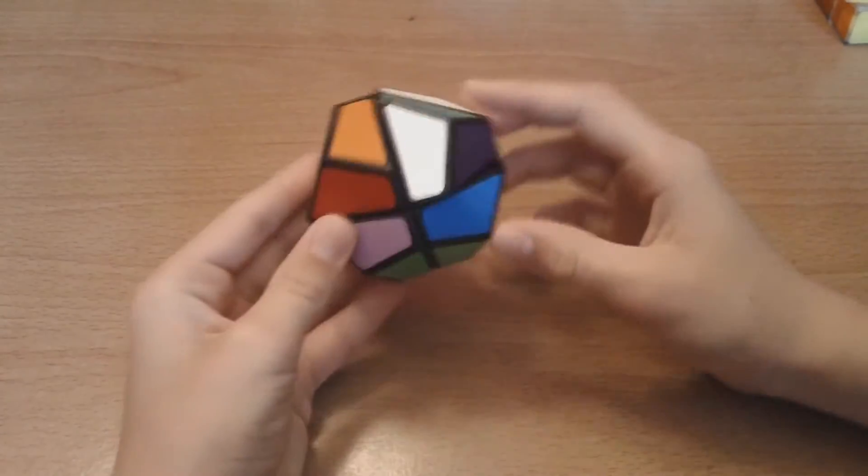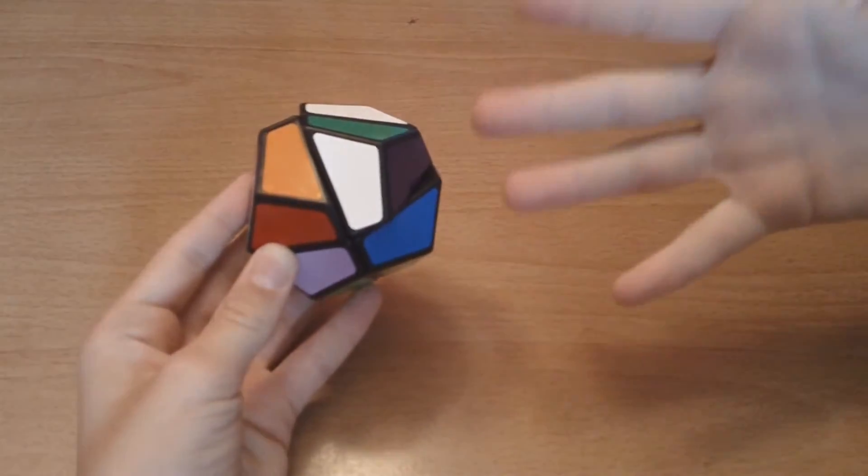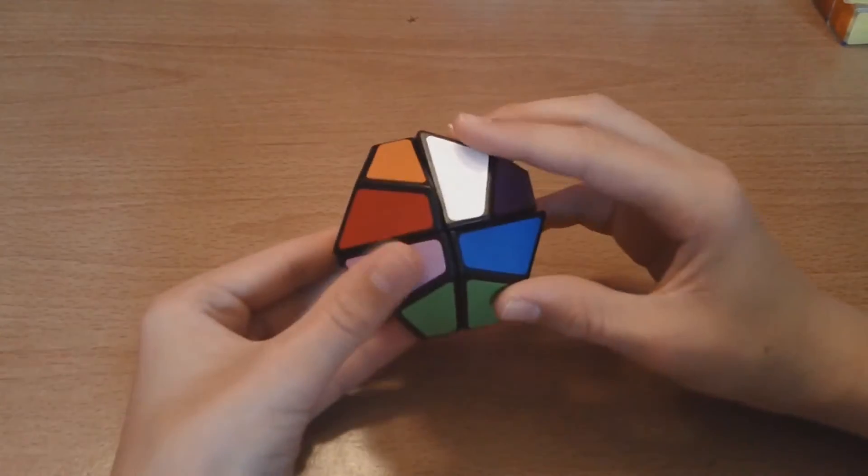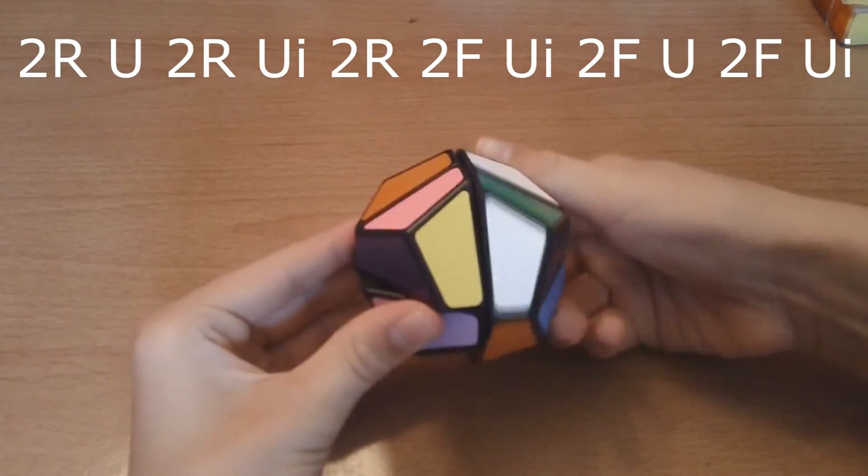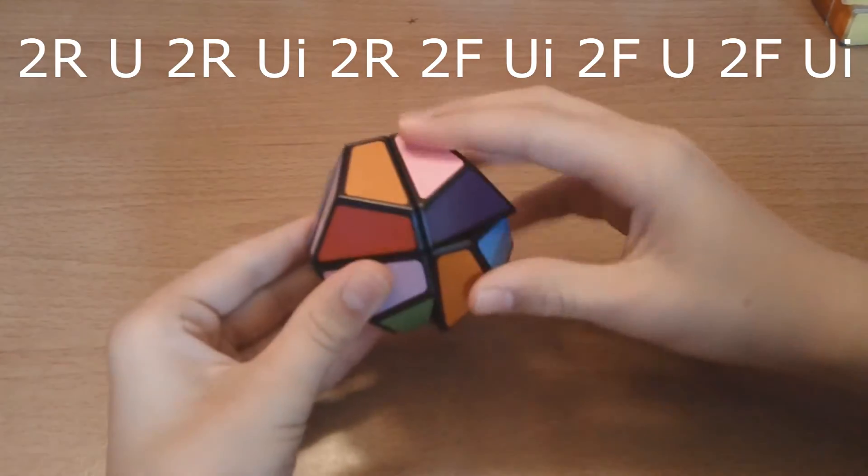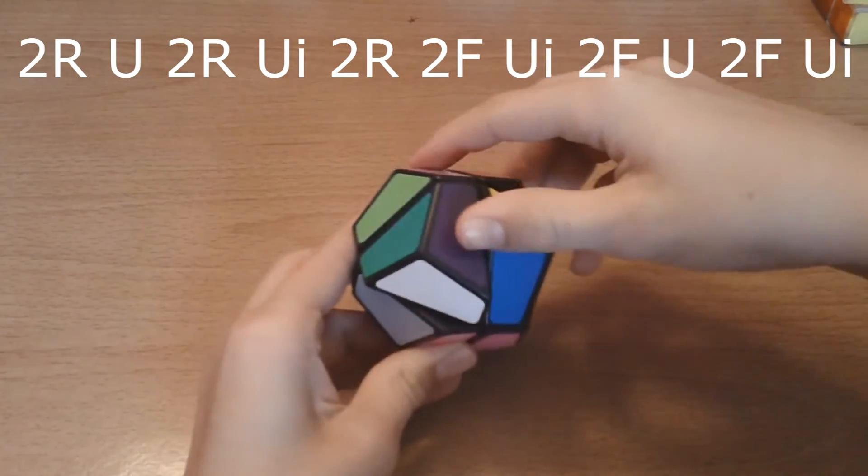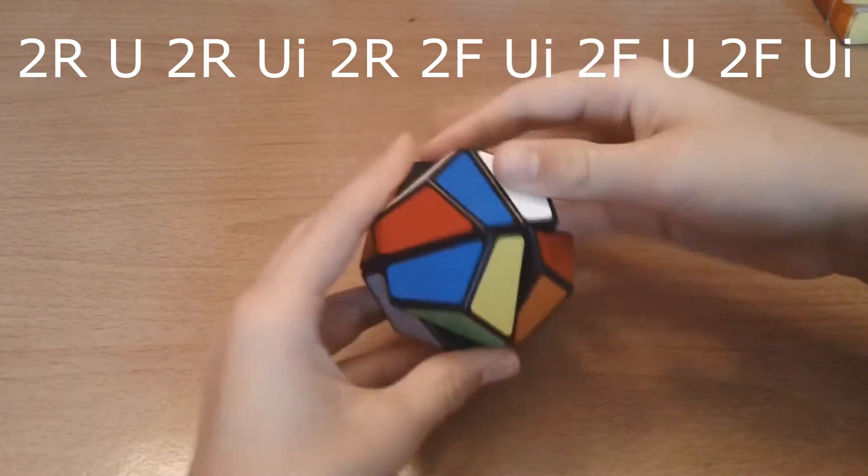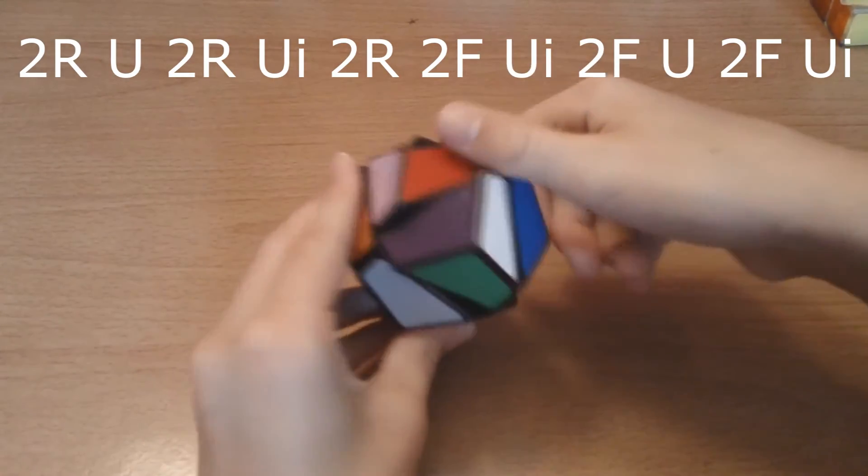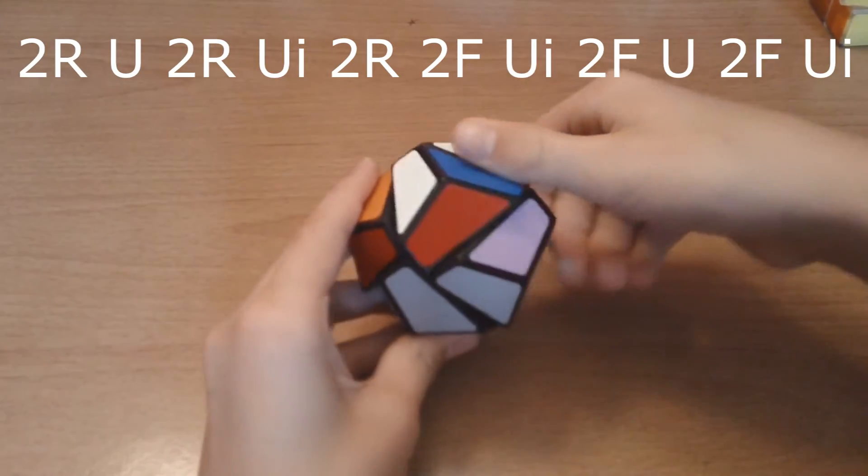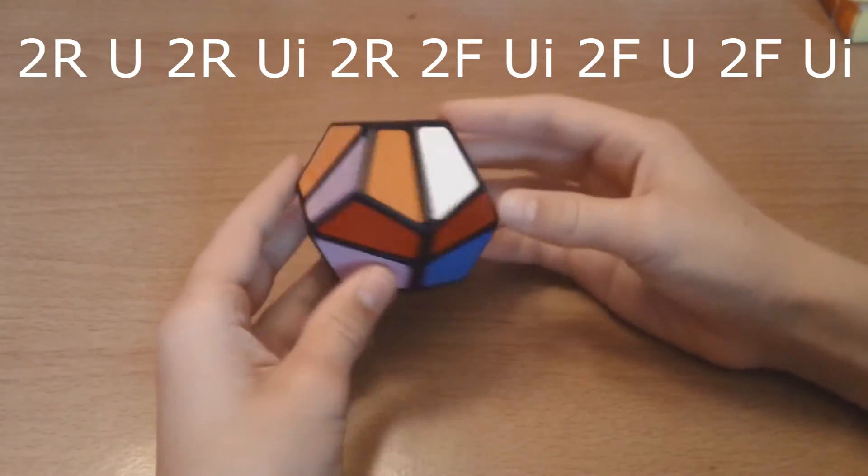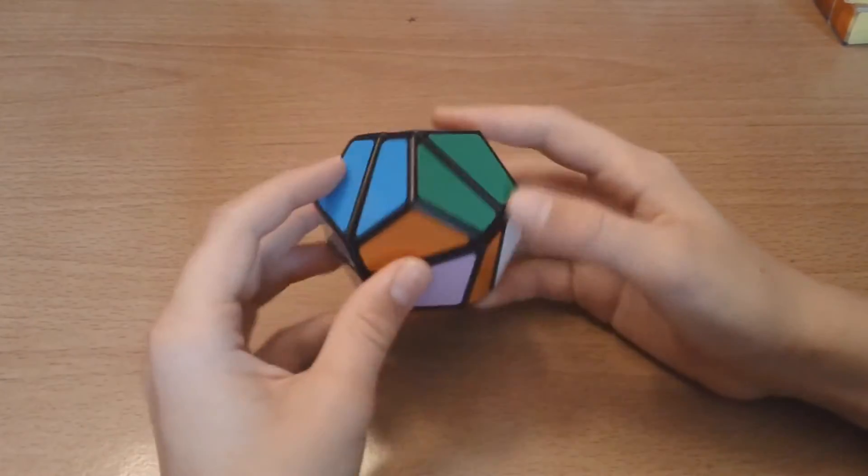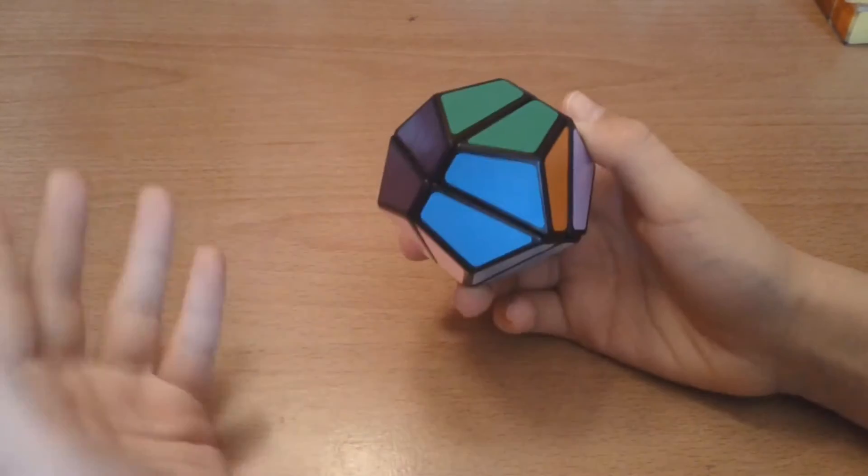So, what we're going to do is we're going to switch these two corners and we're going to be using a cuboid method from the 2x2x3. And that algorithm is 2R, U, 2R, UI, 2R, 2F, UI. And that put these two pieces switched, or is it these two? One of those two pieces are switched now.